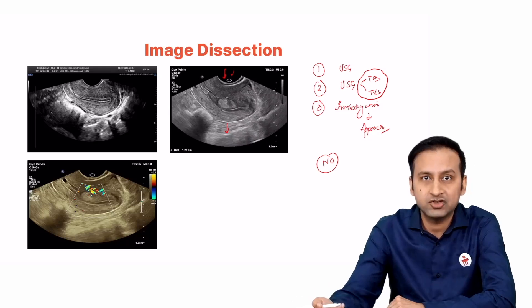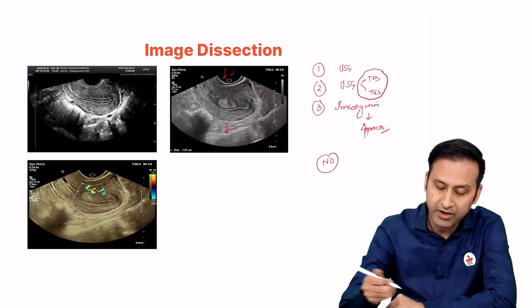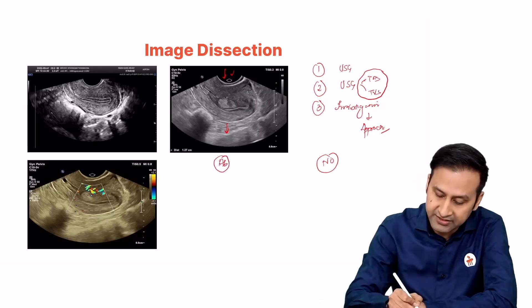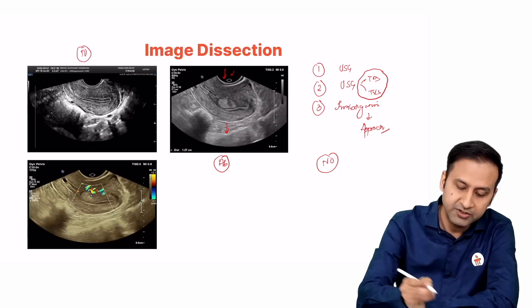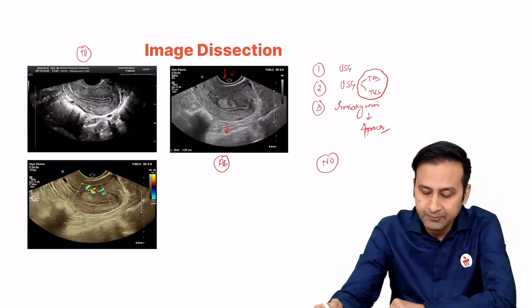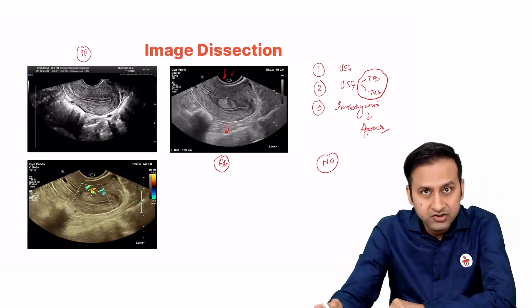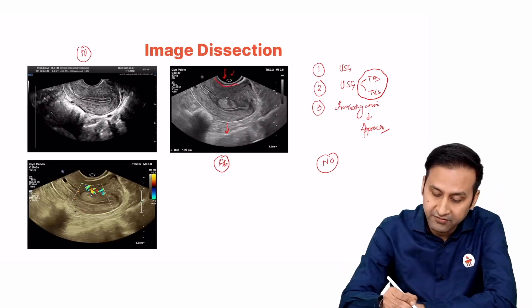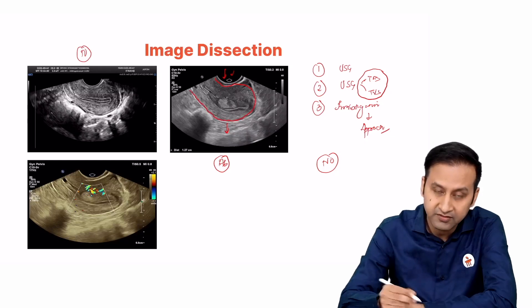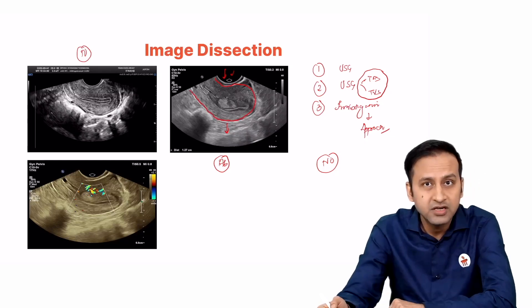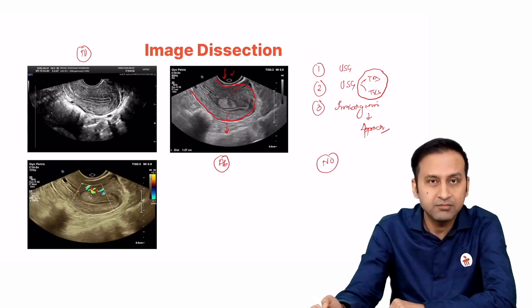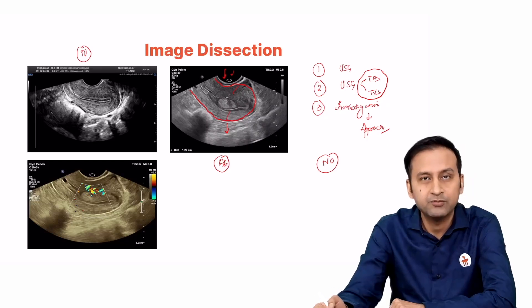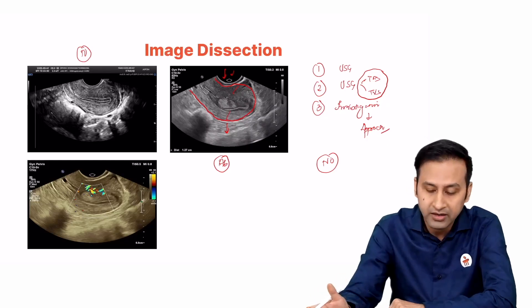Now comes the image dissection part. Have a look at the image the examiner has given you, with a normal image kept for reference on the side. We can see a very well-demarcated globular organ — this is nothing but the uterus. Look at the myometrium: it looks almost okay, homogeneous, and almost hypoechoic.